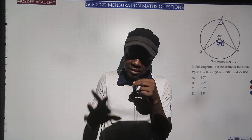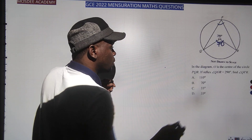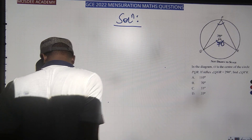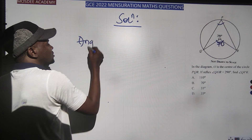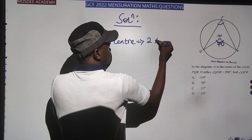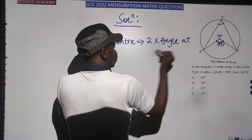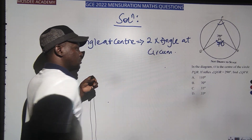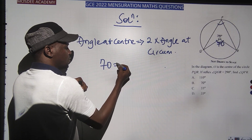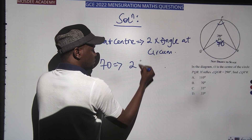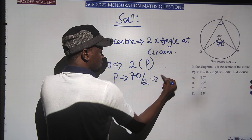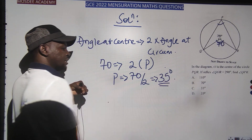The theorem is: angle at center equals 2 times angle at circumference. The center angle is now 70°, so 70 = 2 times angle at P. Making P the subject: P = 70 ÷ 2, which gives 35°. That is the answer to question one.